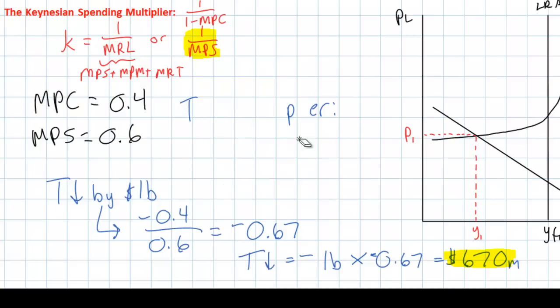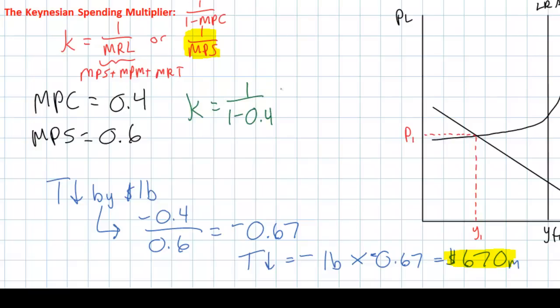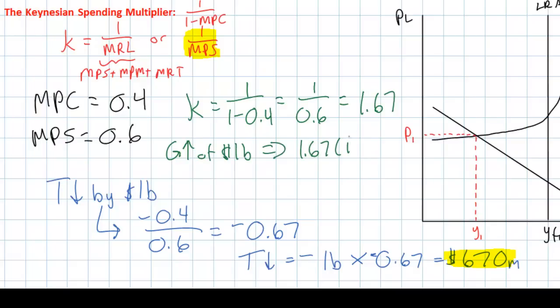How does this compare to the effect of a one billion dollar increase in government spending? Given an MPC of 0.4 and MPS of 0.6, the spending multiplier K equals 1 over (1 minus 0.4), which is 1 over 0.6, equaling 1.67. An increase in government spending of one billion will therefore lead to a 1.67 billion dollar increase in aggregate demand. A tax cut of one billion led to only 670 million dollars of new aggregate demand, whereas a government spending increase of the same amount leads to 1.67 billion. Government spending is more effective at stimulating aggregate demand because G is a direct component of aggregate demand, whereas a tax cut has only an indirect effect.